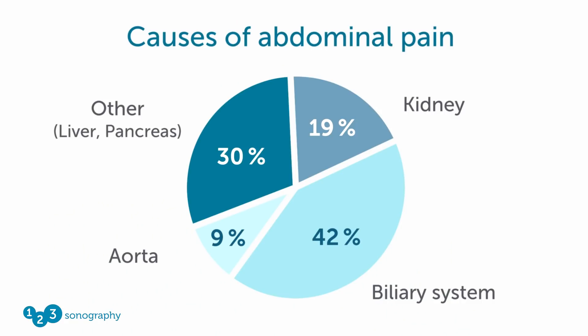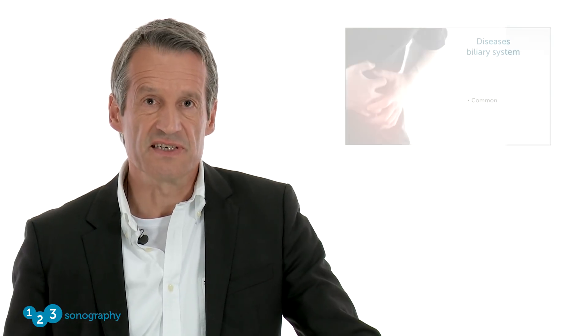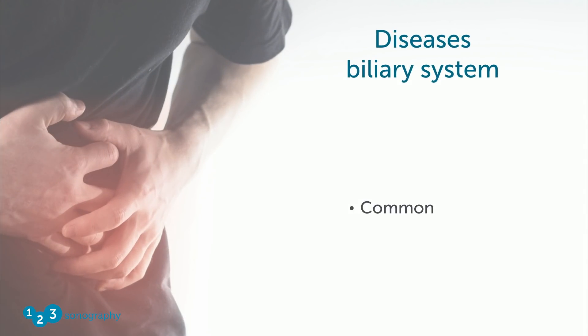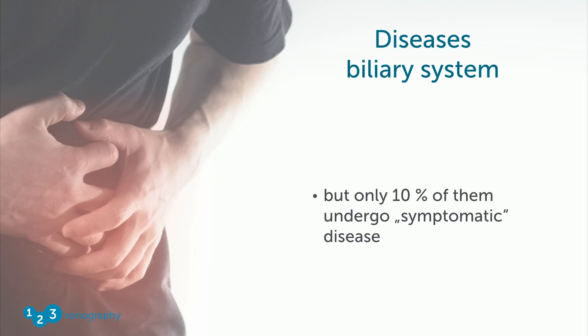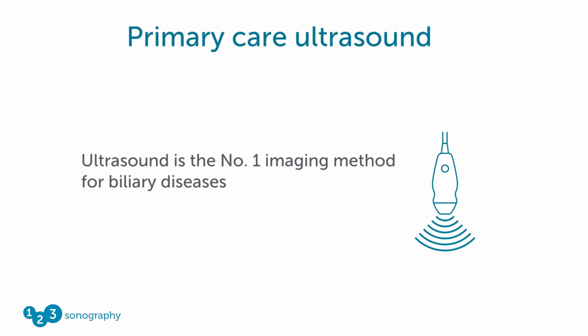In this image, you can see how often the biliary system is affected as a reason for abdominal pain. Diseases of the biliary system are very common. We know that about 10% of the whole population in Europe has gallstones, but only 10% of these people with gallstones undergo what we call symptomatic biliary disease. I want to show you the role of primary care ultrasound when a patient comes to your hospital or primary care unit with the suspicion that a biliary disease is the underlying reason for the pain. Ultrasound, from my experience, is the number one imaging method for biliary diseases.